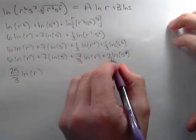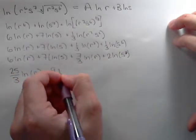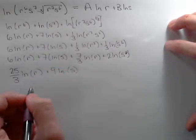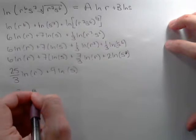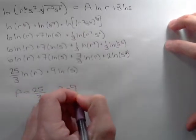And 2 plus 7, so 9 natural logs of s. So the answer is that a is equal to 25 thirds and b is equal to 9.